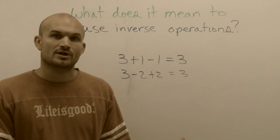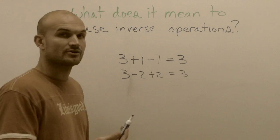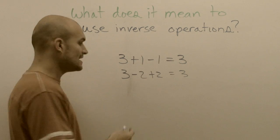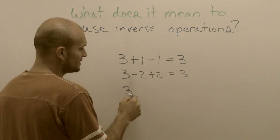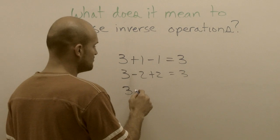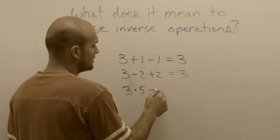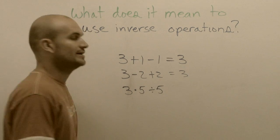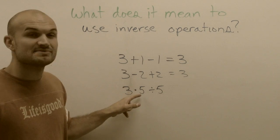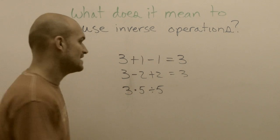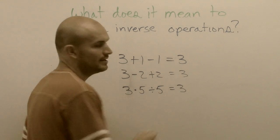Addition and subtraction are inverse operations, and the other inverse operation that we're going to be talking about for this module is multiplication and division. Let's take three and let's multiply it by five and then let's divide it by five. Well, three times five is fifteen divided by five gives you back a three again.